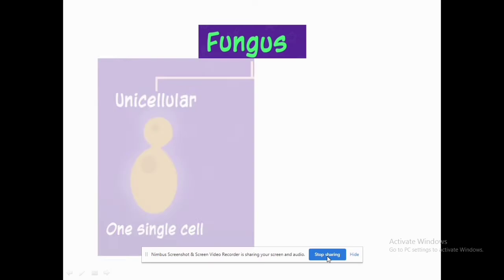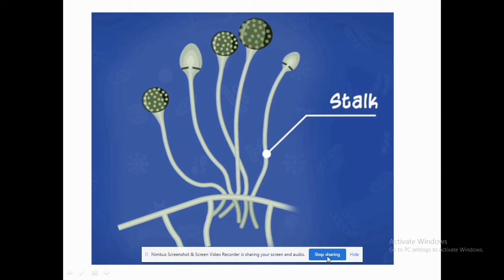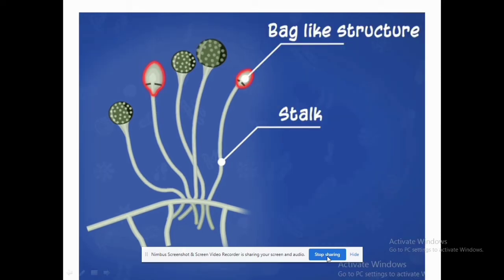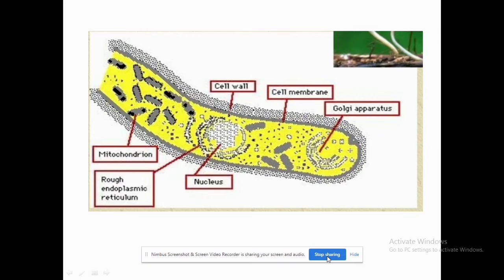Fungi can be unicellular or multicellular. In multicellular fungi, the structure consists of long thread-like structures known as hyphae. A collection of hyphae is known as mycelium. Each hypha contains a cell wall, cell membrane, Golgi apparatus, nucleus, mitochondria, and rough endoplasmic reticulum — the basic components needed for cell functioning.